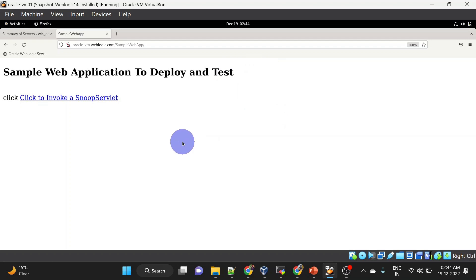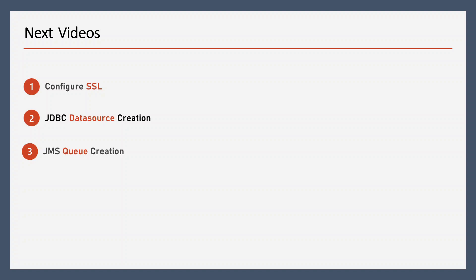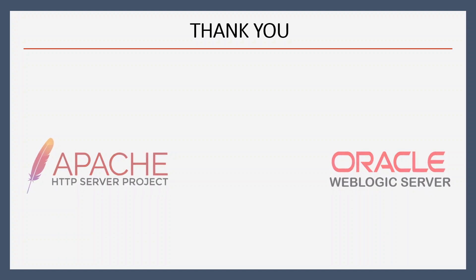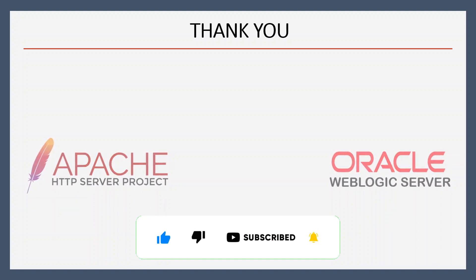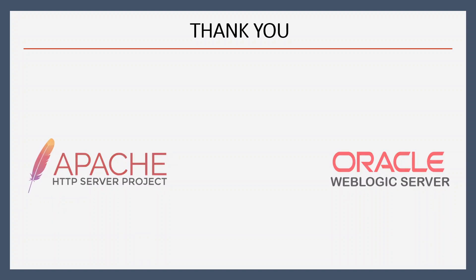You can also check access logs in WebLogic to see if both servers are getting requests or not. That's it for this video. In the upcoming videos we will configure SSL, we will also see how to create data sources, and we will cover JMS queue creation as well. For more such interesting videos, like my videos, subscribe to my channel and hit the bell icon for further notifications. Also leave a comment so that I can cover different topics for you. Thank you.